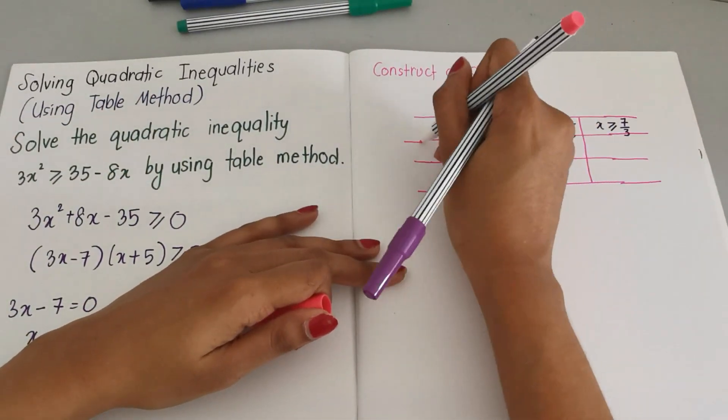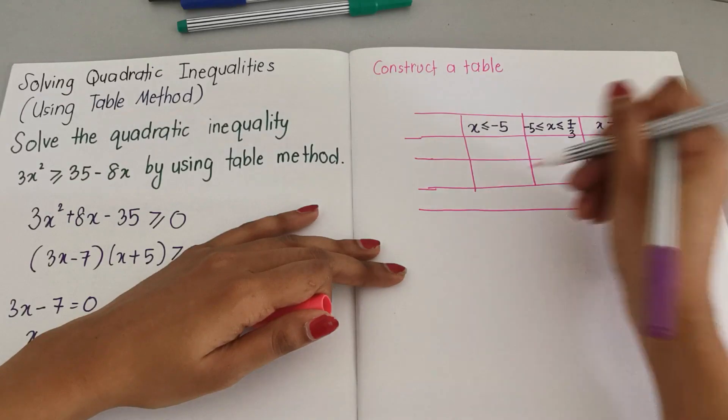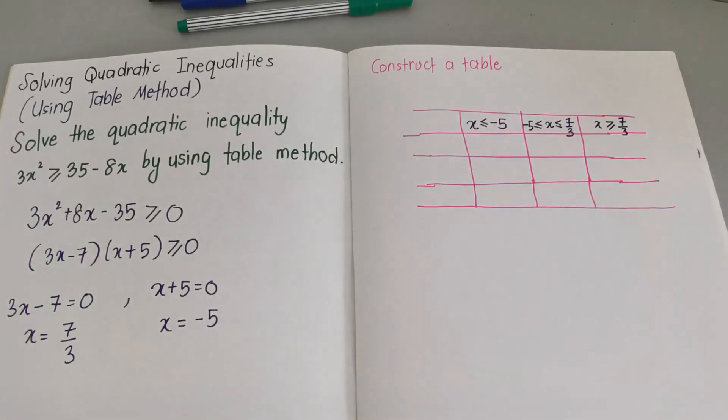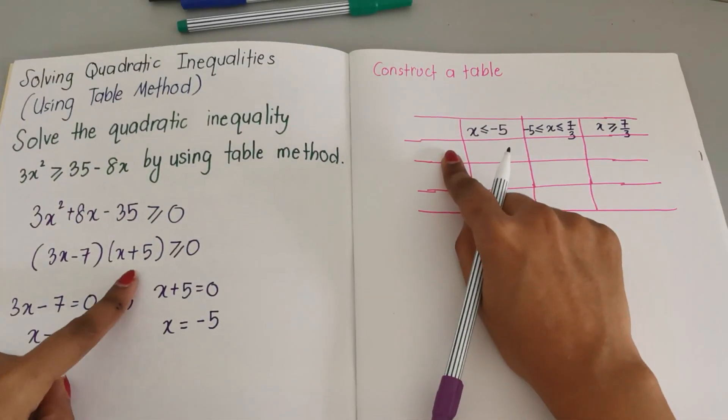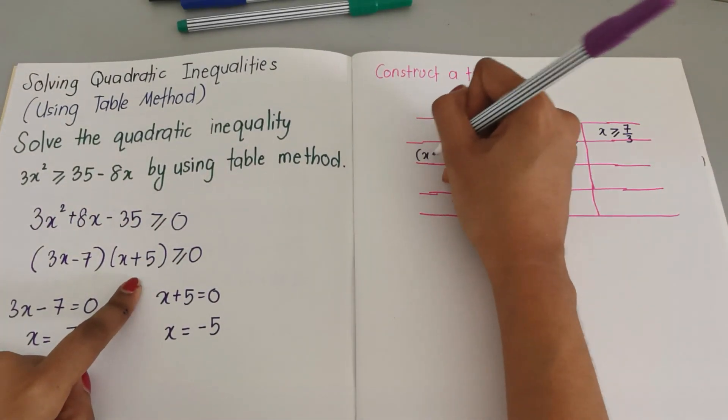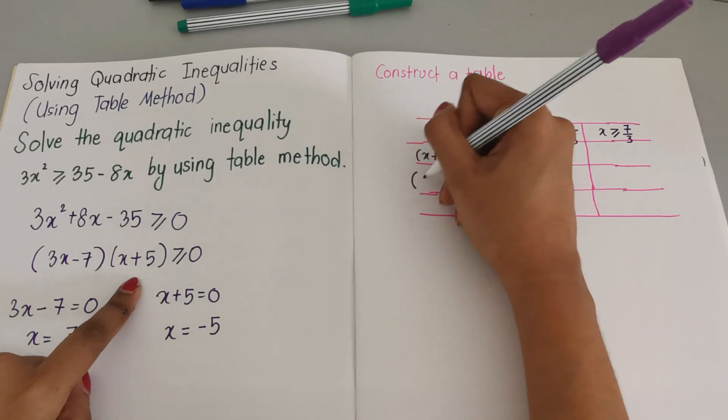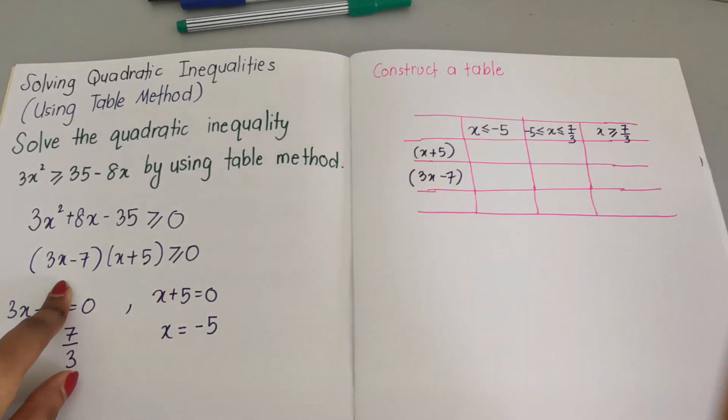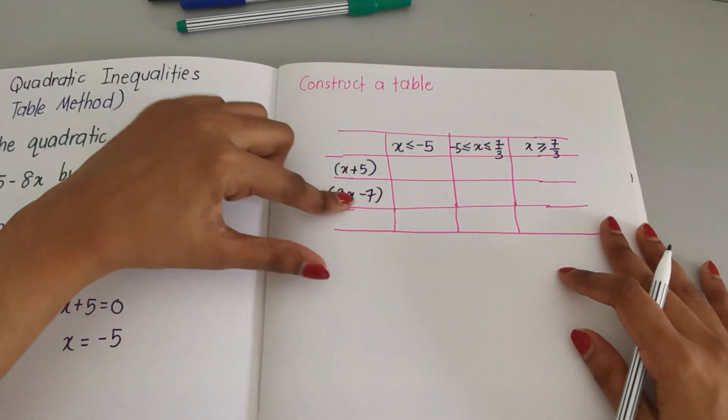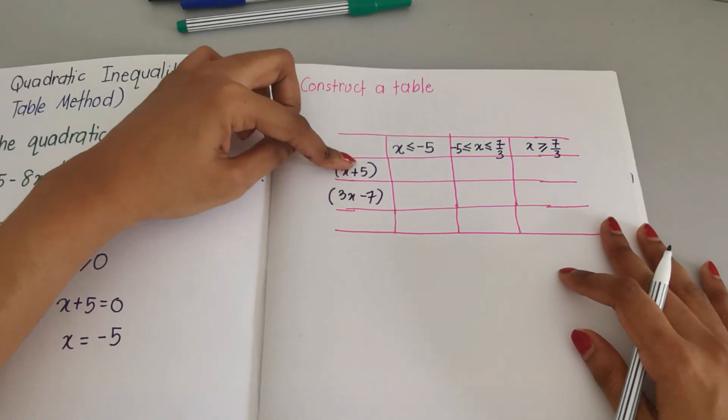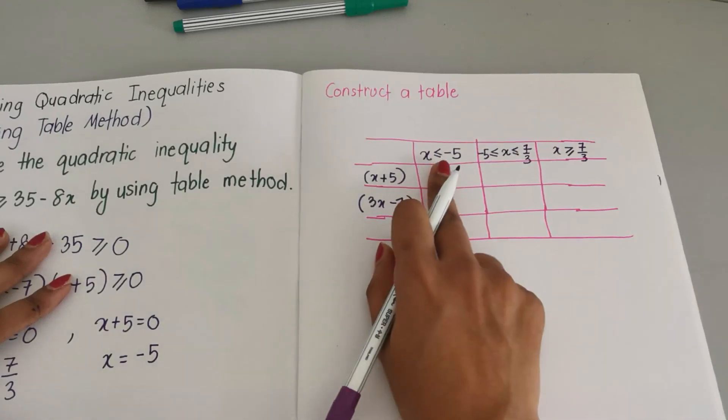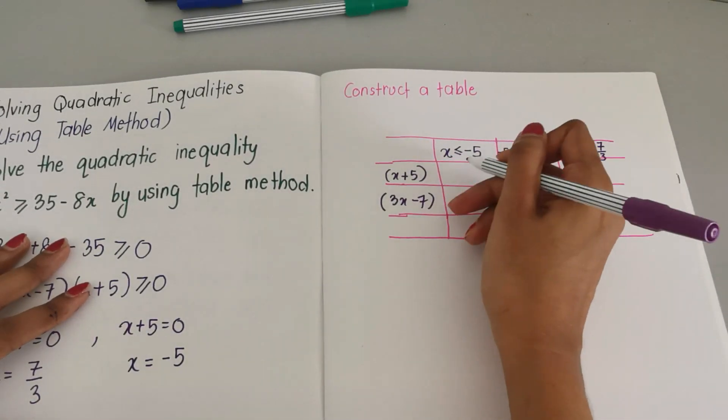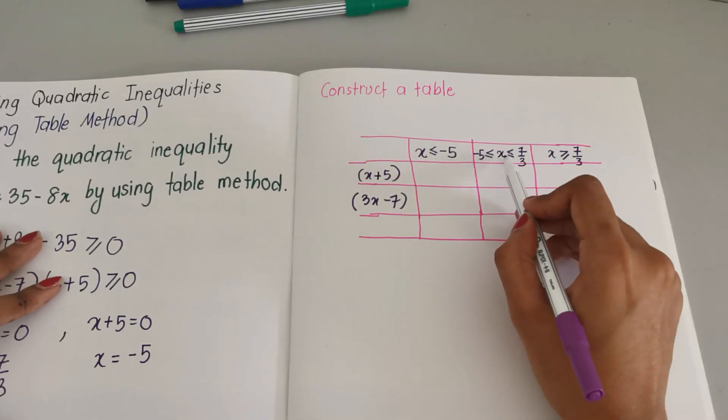Here now I need one more row. Now I'm going to choose x + 5 and the other one I'm going to choose 3x - 7. It doesn't matter which you write first, but the negative one must be first.